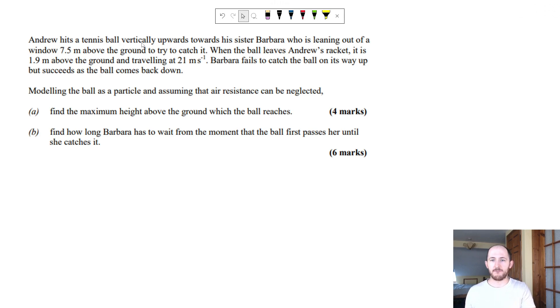So here we have Andrew hits a tennis ball vertically upwards towards his sister Barbara, who's leaning out of a window seven and a half metres off the ground to try and catch it. When the ball leaves Andrew's racket, it is 1.9 metres above the ground and travelling at 21 metres per second. Barbara fails to catch it on the way up, but succeeds as the ball comes back down. Modelling the ball as a particle and assuming that air resistance can be neglected, find the maximum height above the ground which the ball reaches. This is actually deceptively a bit simple because you don't actually need all that much information for part A. A lot of this information is redundant.